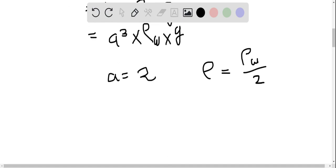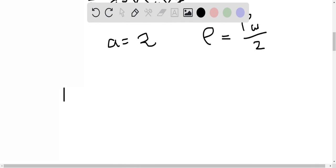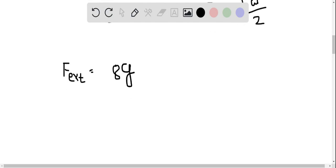If we put the values in the main equation, we have F external which is equal to—if we take common the a cubed part, this is 8, and we also take common the gravitational constant g—so we have ρw minus ρw by 2.